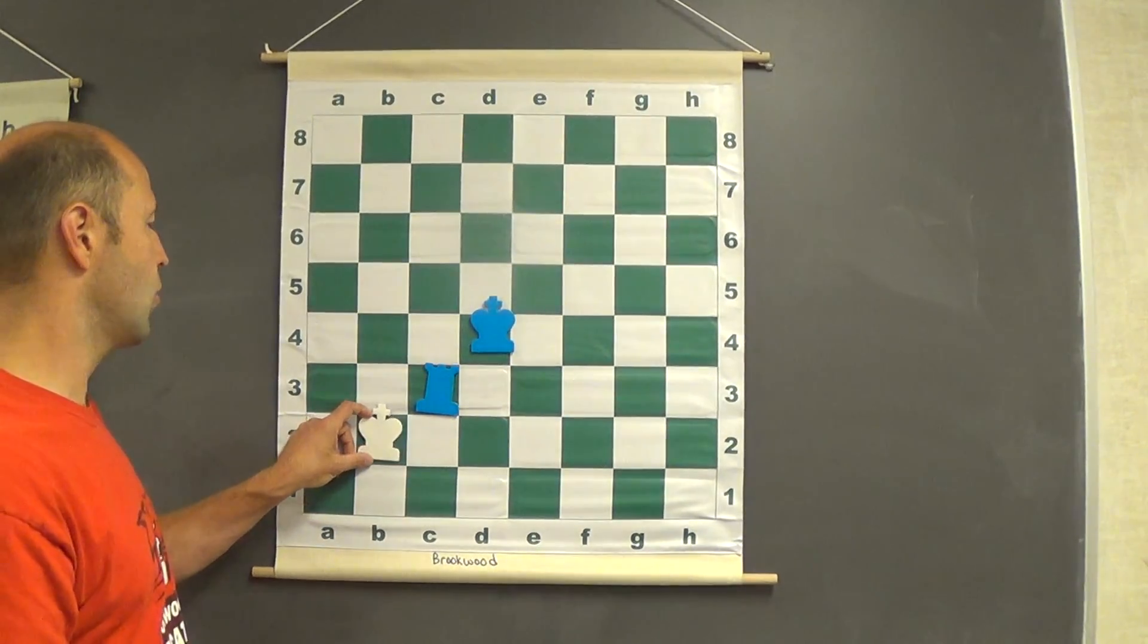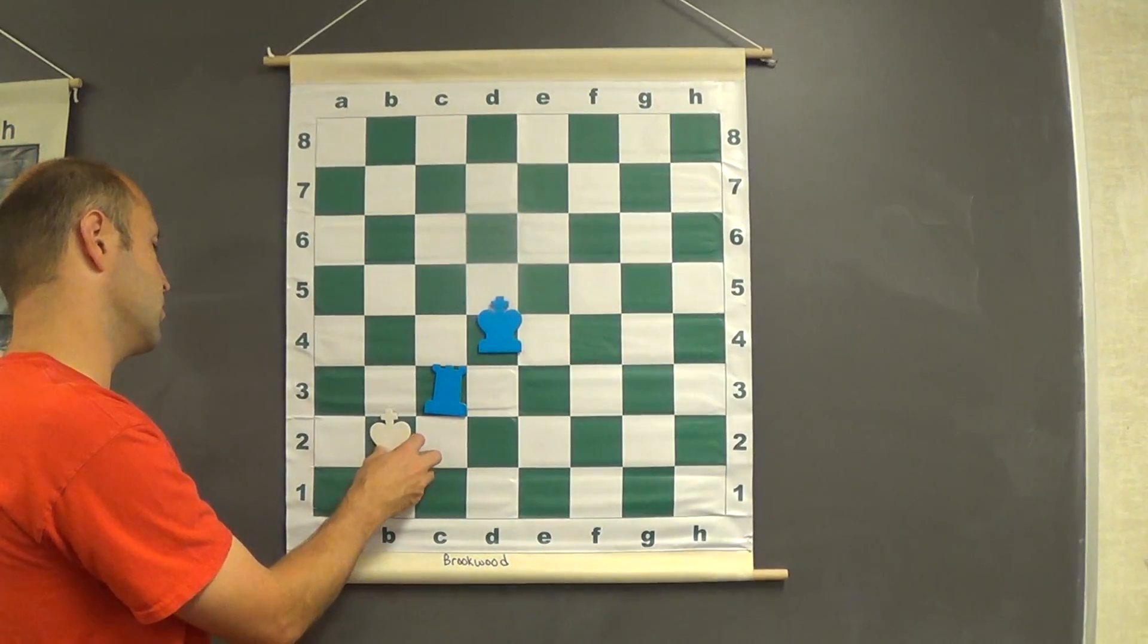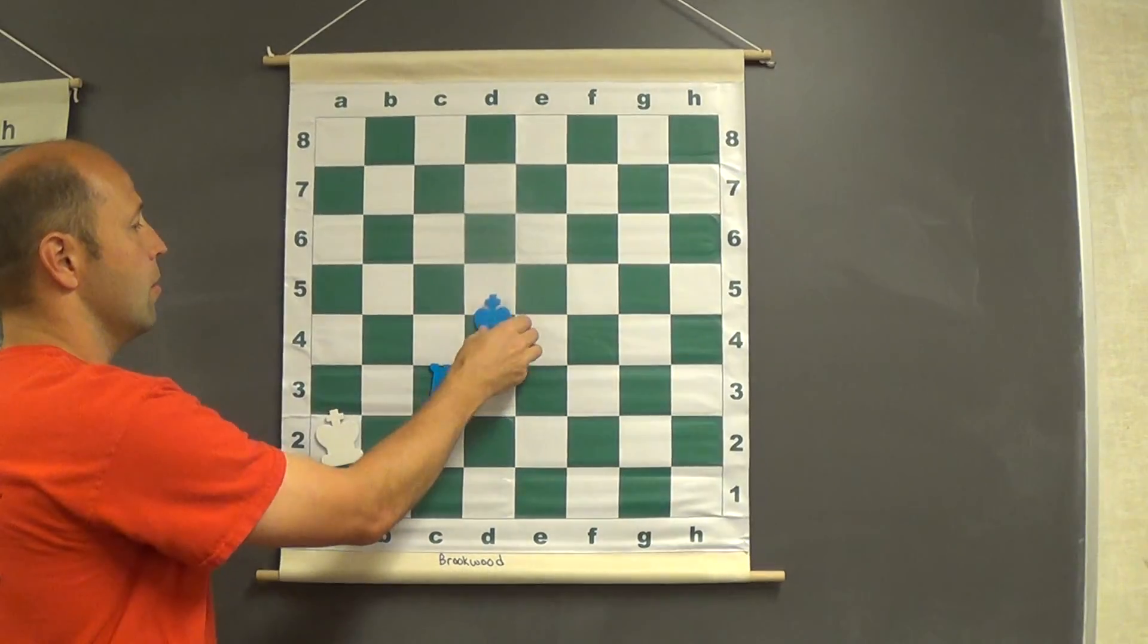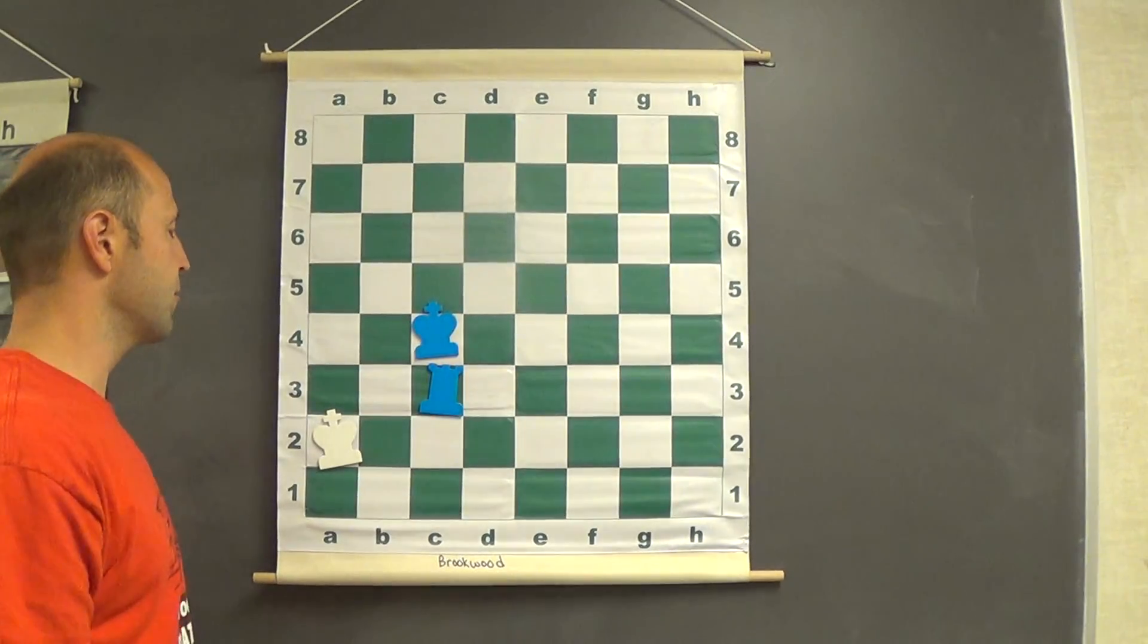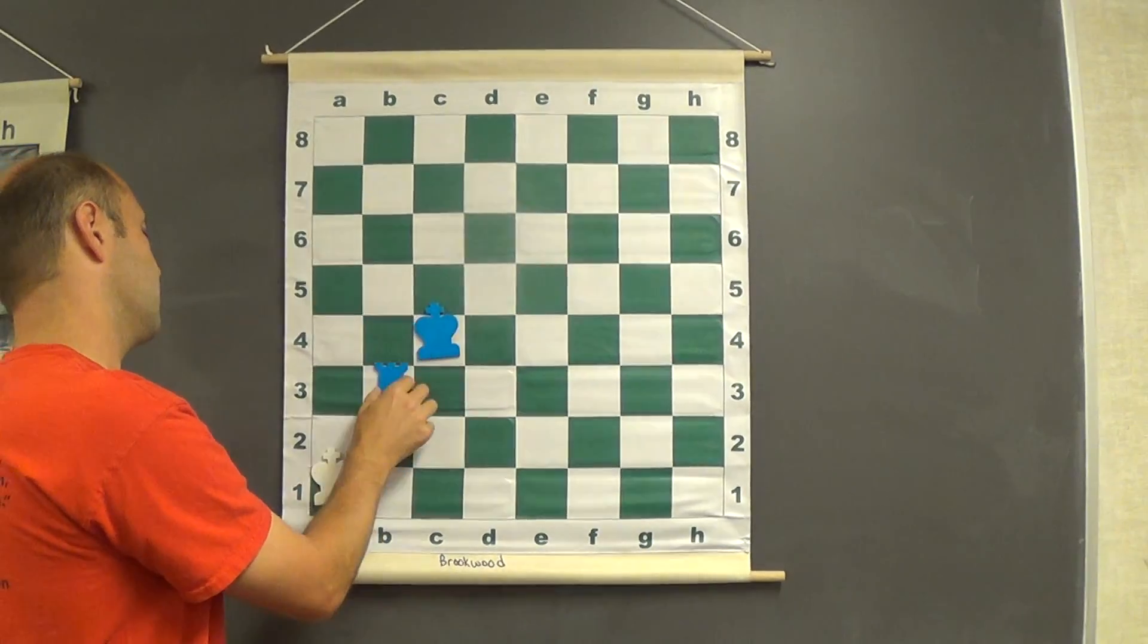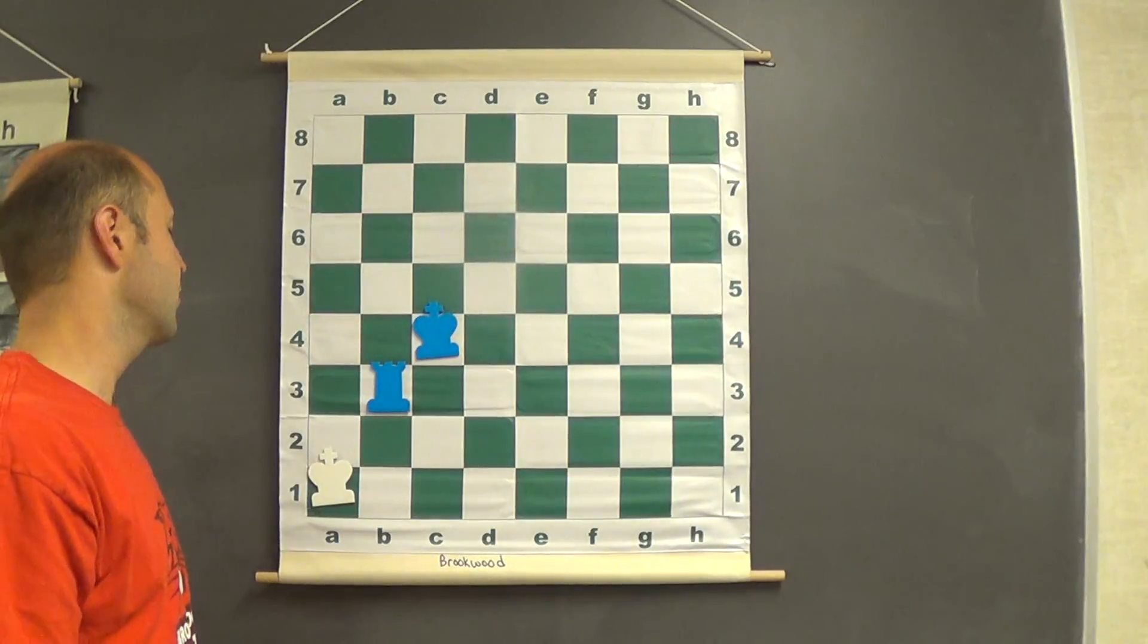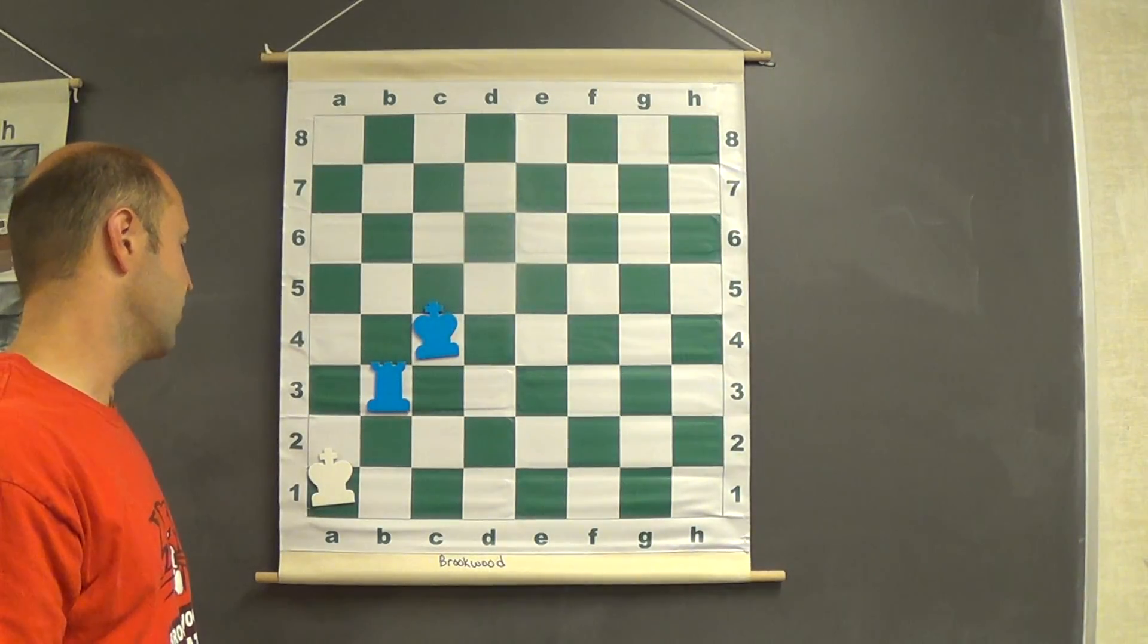Now white has no choice. Has to choose one of the back two rows. Black moves the king over. Only one square option here. Black now is on what we call the last row, which at Brookwood we call tunnel mate. We make a long tunnel for white. Right now it's only two squares.